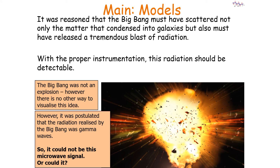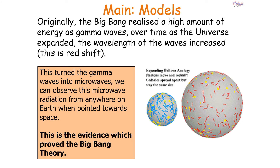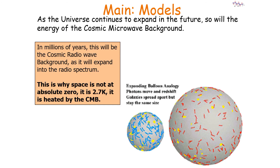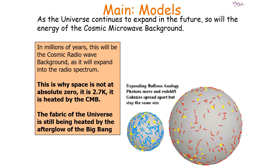Why is this radiation a microwave and not a gamma wave? Originally the Big Bang released a high amount of energy as gamma waves, but over time as the universe expanded, the wavelengths increased by redshift, turning gamma waves into microwaves. Therefore we can observe this microwave radiation from anywhere on Earth when pointed towards space. This is the cosmic microwave background — found everywhere in space. As the universe continues to expand, this will eventually become the cosmic radio wave background. This is also why space is not at absolute zero — it's 2.7 Kelvin, heated by this cosmic microwave background.